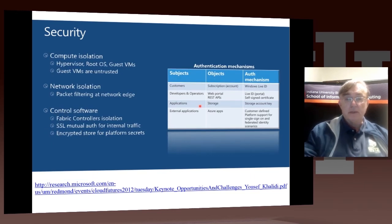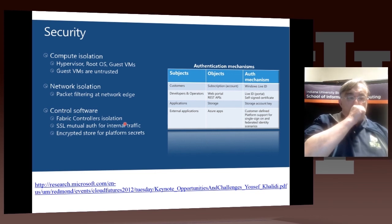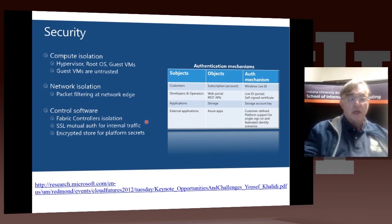Here are some remarks on how we actually implement these security models. The guest virtual machines are never trusted. The hypervisor and the root OS are isolated and trusted. We have network isolation — we filter packets at the network edge to make sure they're valid and not malicious. We isolate the fabric controllers, we use SSL for any traffic, and for secrets we use encrypted storage.